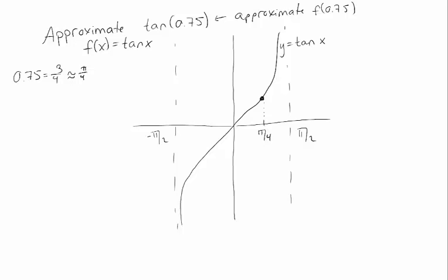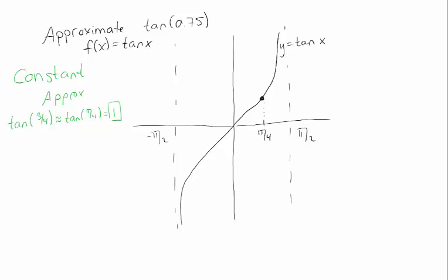For a constant approximation, since 0.75 is close to π/4, tangent of 0.75 should be close to tangent of π/4. So our approximation is that tangent of 0.75 is about 1. Visually, this means I assume everything nearby is also 1 — a constant horizontal line. At x = 0.75, I take the value of the green function and hope it matches the black function's y value. That's the constant approximation.